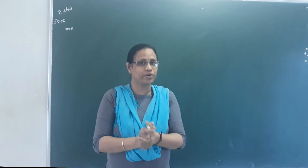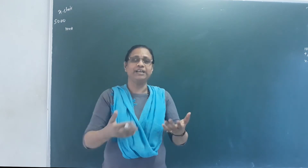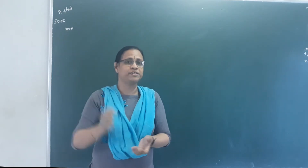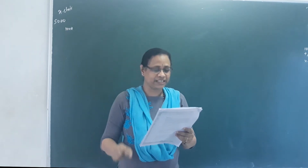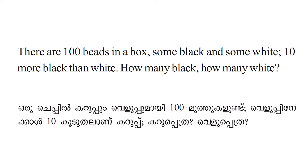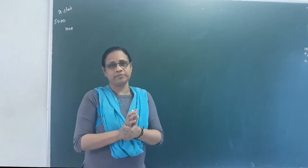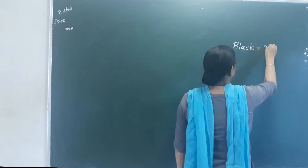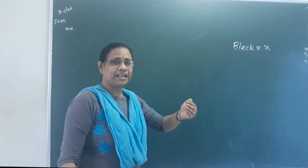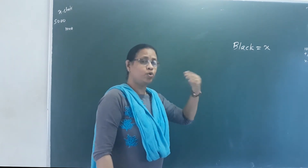There are a hundred beads in a box, some black and some white. Ten more black than white. How many black and how many white? Now I have to take the black beads. We learned a few years ago — we have to take X. Instead of these black beads, there are 10 more than white beads.